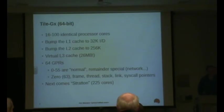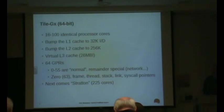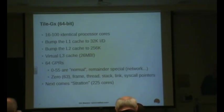So registers 0 to 55, with a dedicated zero register, dedicated frame, thread state, link, and syscall registers. With 64 new 64-bit architectures, it's very common now to have enough registers that you can just keep one around dedicated to syscall numbers and so forth. The next thing they're working on is called Stratton, which has 225 cores on a single chip — and they're increasing from there. It's truly scary where this is going.